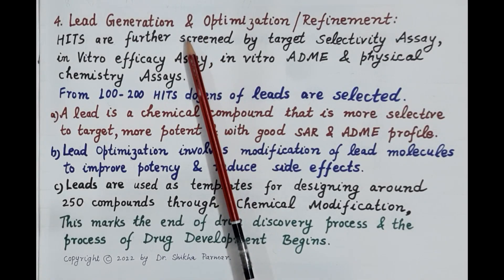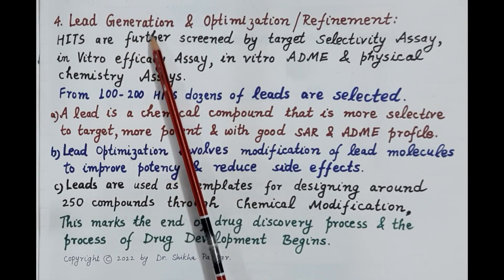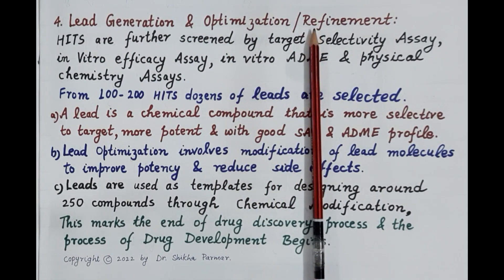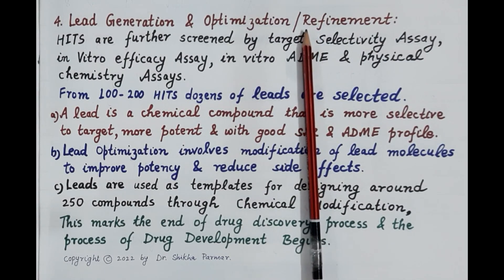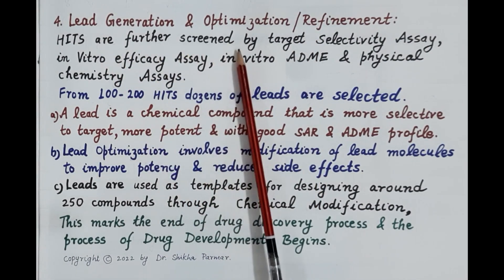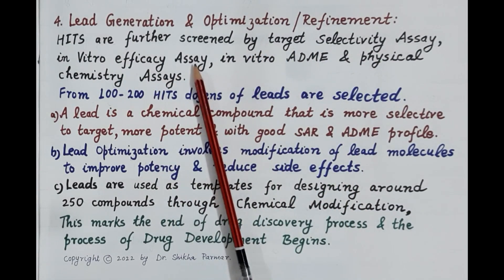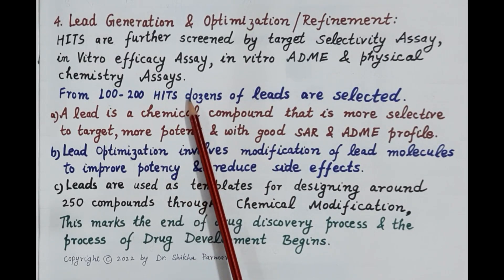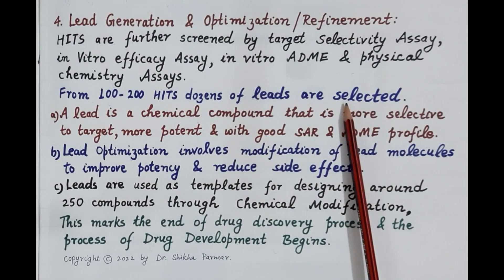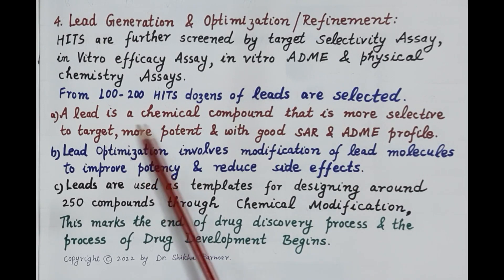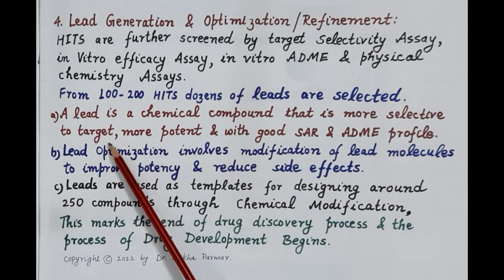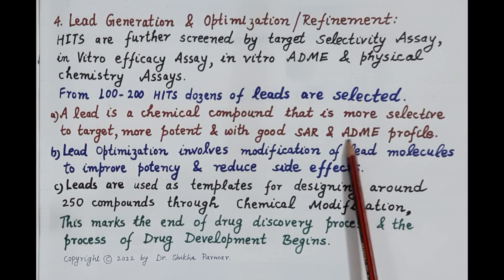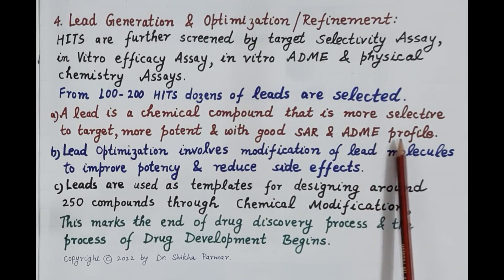The next step is further screening of hits and generation of leads, followed by lead optimization. Hits are further screened by target selectivity assay, in vitro efficacy assay, in vitro ADME, and physical chemistry assays. From 100 to 200 hits, dozens of lead compounds are selected. A lead is a chemical compound that is more selective to the target, more potent, and has a good structure-activity relationship.